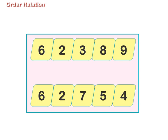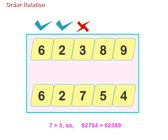There is also a shortcut to compare two numbers. Place the numbers one below the other as shown on screen. Take the same digits and cross the first different digits from the left. Compare the different digits.